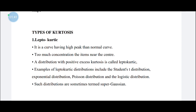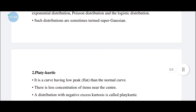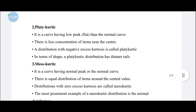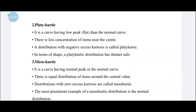The second type is platykurtic. Platykurtic distribution has a low peak compared to normal distribution - it is flat. There is less concentration of items near the center. Platykurtic distribution has negative excess kurtosis.